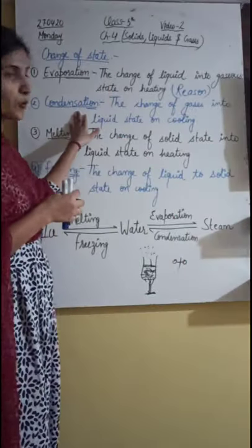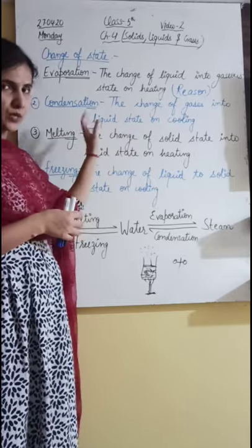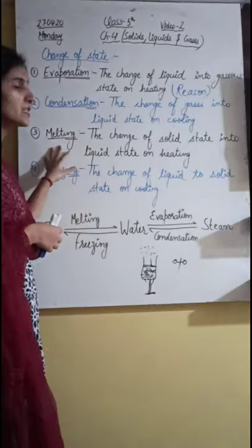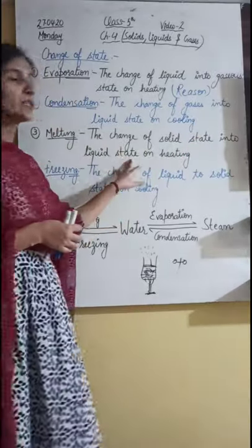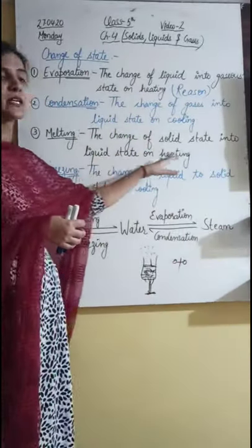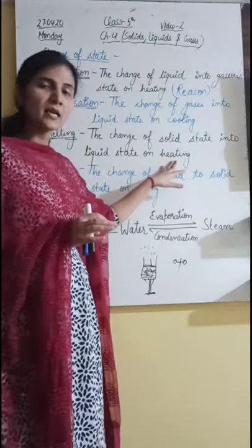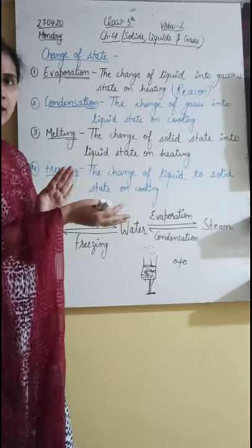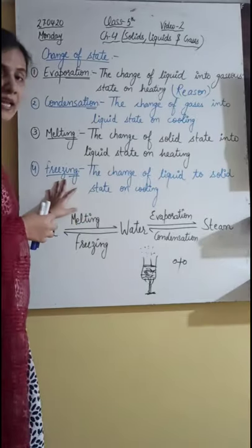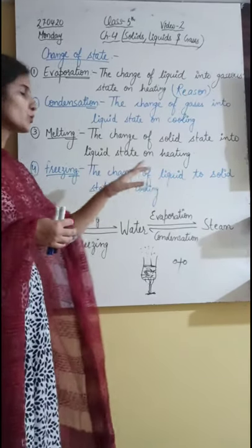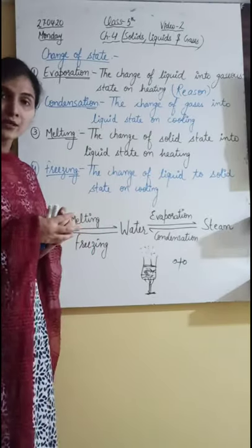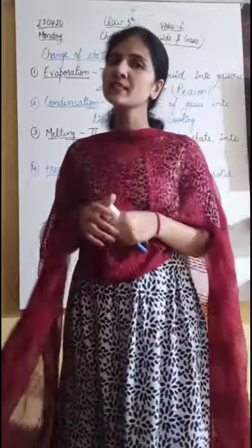This is how gases change into the liquid state — on getting cooling only. Cooling must be written in this definition. Next is melting: the change of solid state into liquid state on heating. And freezing is the reverse — the change of liquid state into solid state on getting cooling.